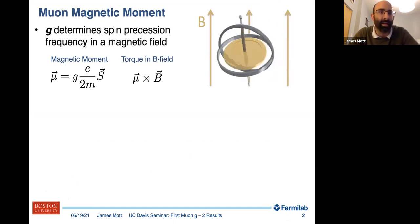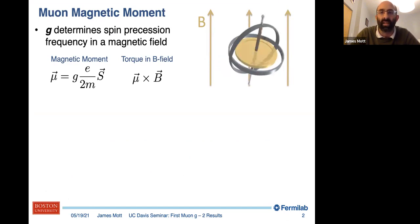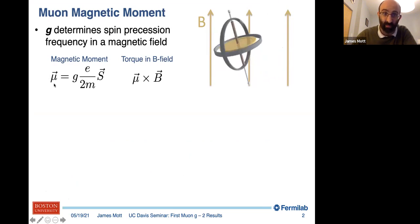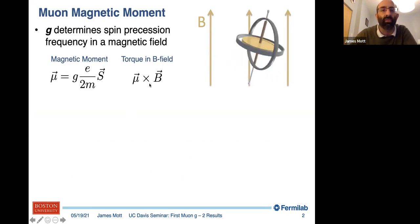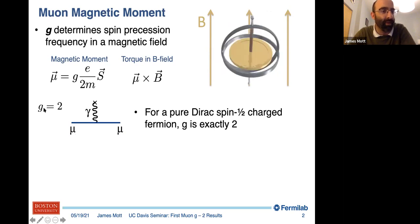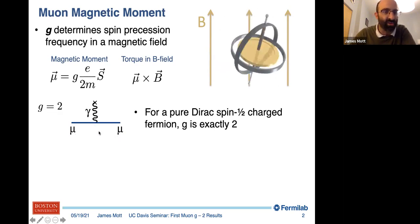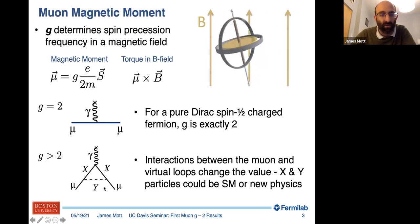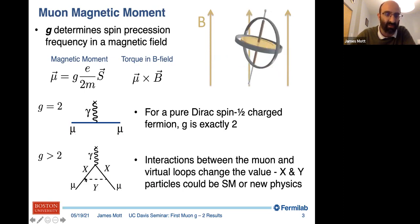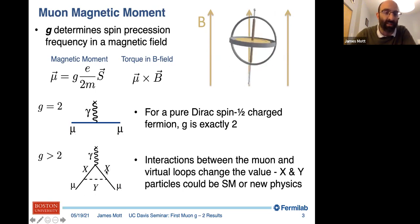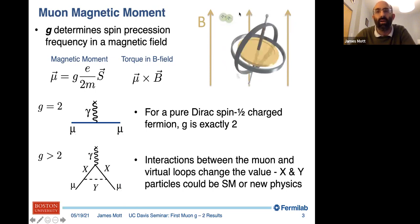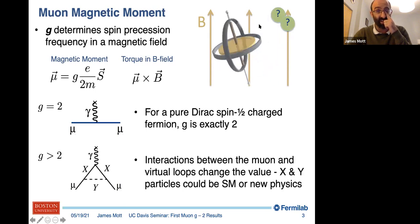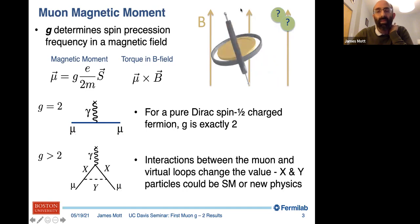The g in g-2 is the Landé factor and it determines the spin precession frequency in a magnetic field — it couples the spin to the magnetic moment. If you put this magnetic moment inside a magnetic field you generate a torque and it precesses around like a top. Now, if the only thing that existed was this one Feynman diagram, from the Dirac equation we know that g is exactly equal to two. But in reality you can draw other diagrams with virtual particles in loops — these could be standard model particles, or new physics. By measuring this precession precisely as the muon goes around in vacuum with all these particle-antiparticle pairs, they change the precession frequency, and we may be sensitive to new physics.